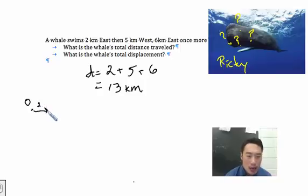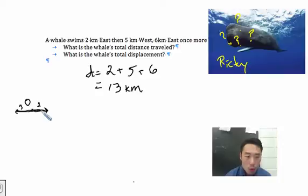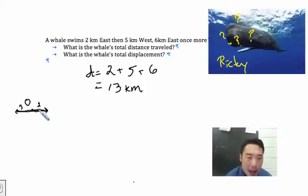And then after that it does a 180 and it swims five kilometers to the west. After the whale does that, it does another 180 — because it forgot something at home — and it swims back six kilometers to the east once more. And it ends somewhere there — that's the ending point.